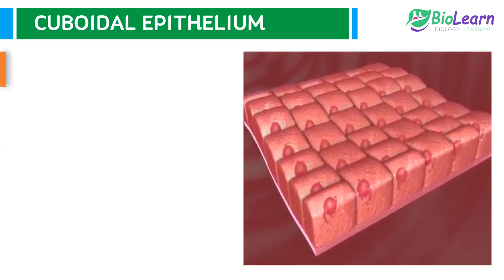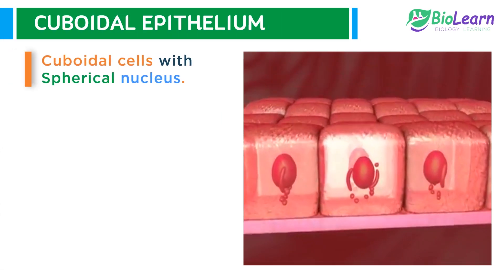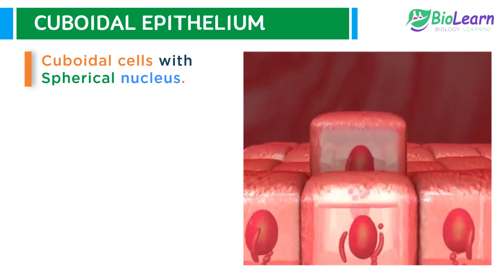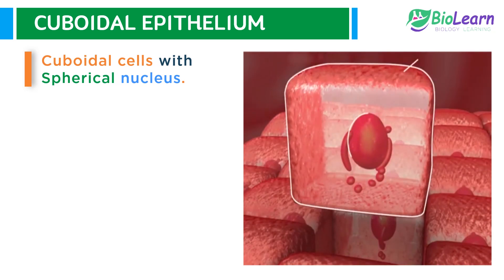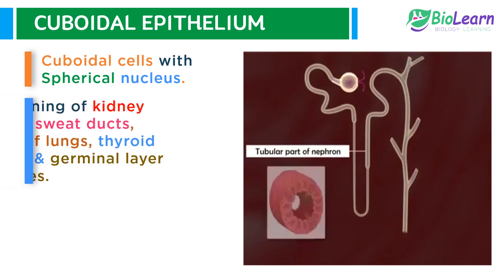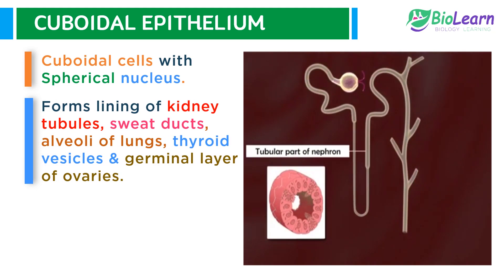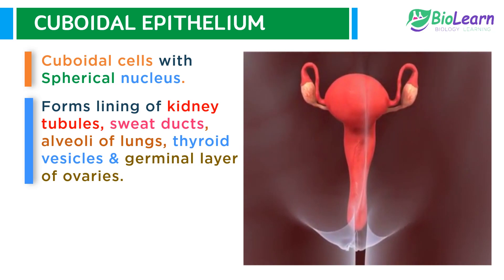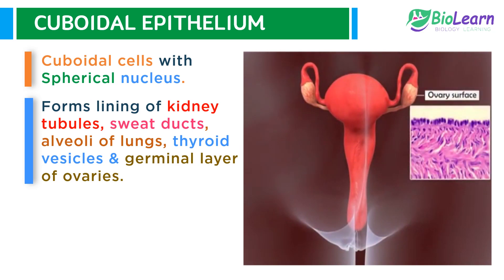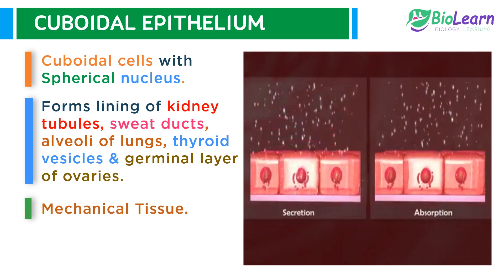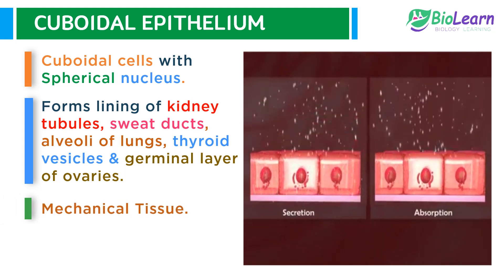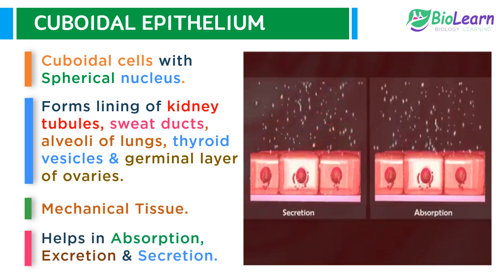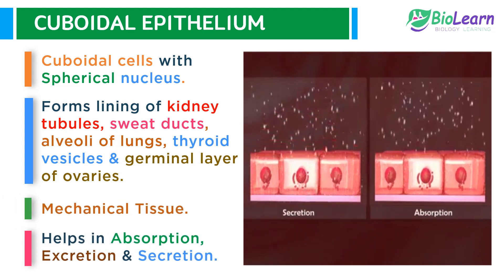Cuboidal epithelium consists of cuboidal cells which have a centrally located spherical nucleus. It forms the lining of kidney tubules, duct of sweat glands, alveoli of lungs, thyroid vesicles, and germinal layer of the ovaries. It is a mechanical tissue and also helps in absorption, excretion, and secretion.